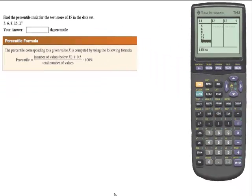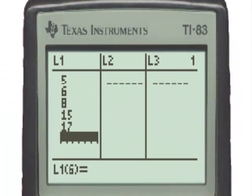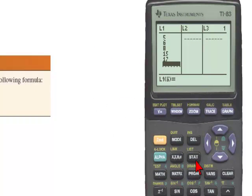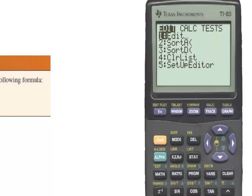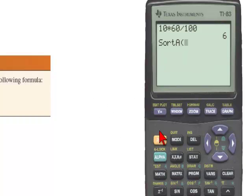First we'll put the data into the TI-83 and as we do we see that this data is already in ascending order. However if this was not in ascending order then we would go to the STAT button, select the number 2 and put in L1 using the yellow button and L1 over the number 1 and hit enter.